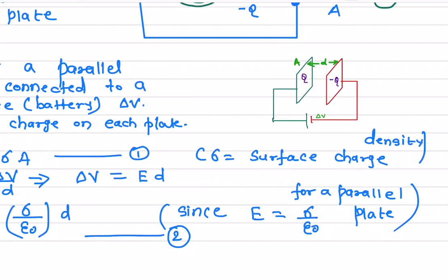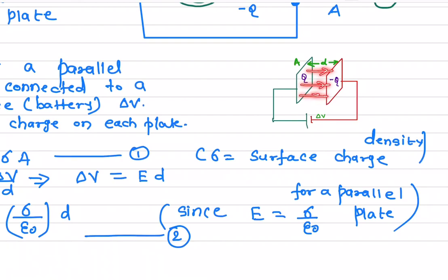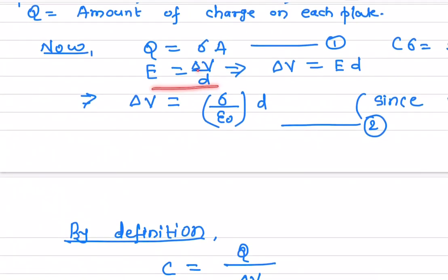The electric field between the two plates is given by the potential difference delta V divided by the distance between the plates. This gives a homogeneous electric field because the field is constant at any point between the plates. Rearranging, the potential difference delta V is equal to the electric field times the distance.